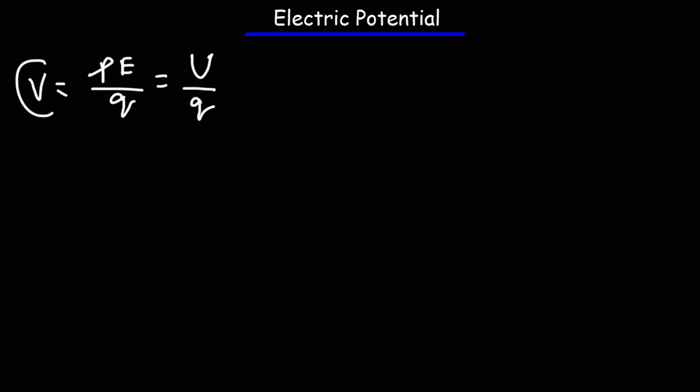V is electric potential. PE is electric potential energy. Make sure you notice the difference between them — they sound similar, but they're different.